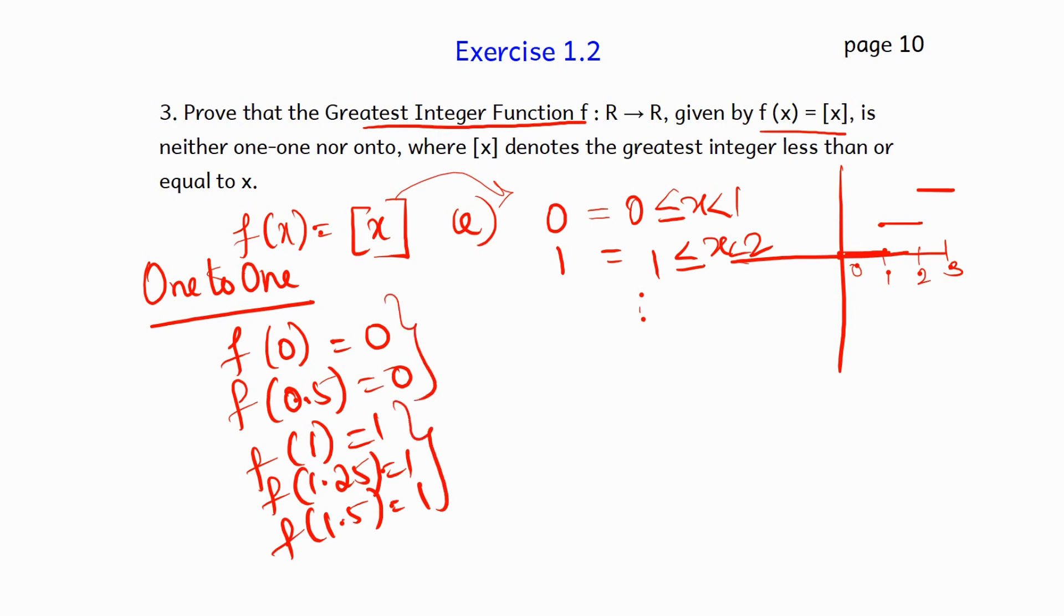Similarly, from 1 to 2, f(x) value is 1. So in that interval, if I take 1.25, 1.5 or 1.75, all these values will have the functional output of 1. So multiple values of x are having the same output. They are not distinct. So it is not a one-to-one function.